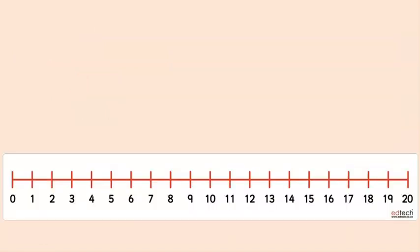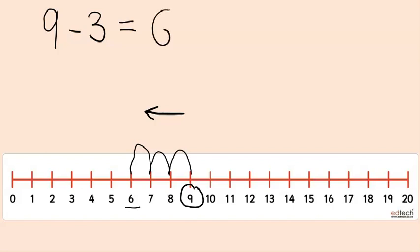We also use a number line for subtraction, so if we were doing 9 take away 3, we would see that we're starting with 9, so we would circle where we start. We're taking away 3, so we do 3 jumps backwards, so we would do 1, 2, 3, and I always ask the children to underline where they end up, so they can see that if we take away 3 from 9, we get 6.